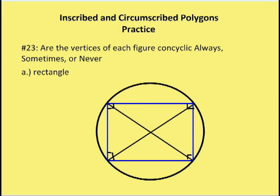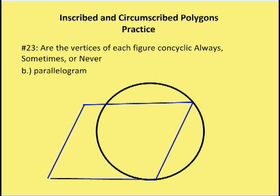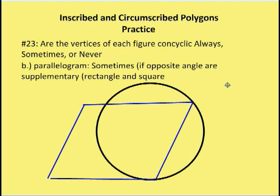So the rectangle is always concyclic because opposite angles are supplementary. Next is a parallelogram, and the answer is sometimes — only if the opposite angles are supplementary, which is the case in a rectangle and a square. So if it's a rectangle or a square, that parallelogram is going to be concyclic. Rectangle is always; parallelogram is sometimes.